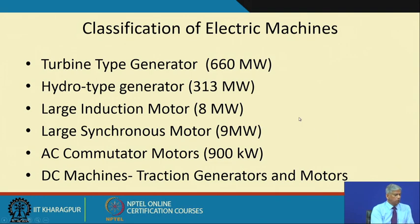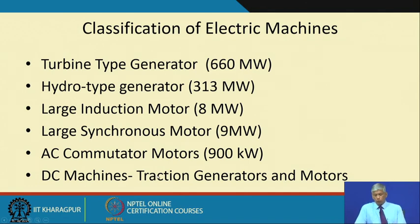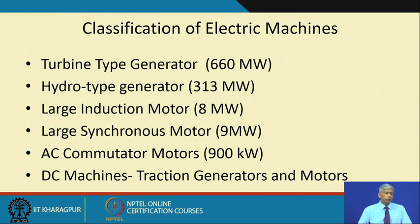Electrical machines — generators or motors — can be very large: 660 megawatt hydro-type generators, 313 megawatt generators, large induction motors of 8 megawatt, large synchronous motors of 9 megawatt, AC commutator motors, DC motors, traction generators and motors, and railroad locomotives. Motors and generators are present almost everywhere, and we will see how we can find out faults in such systems.